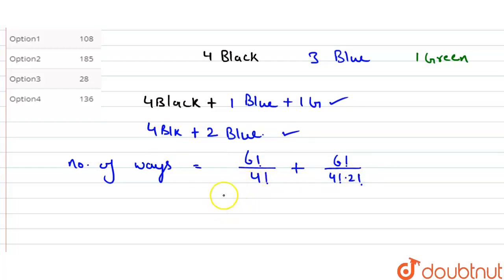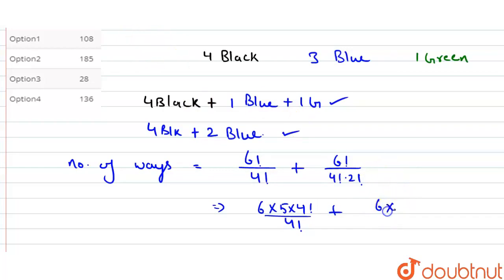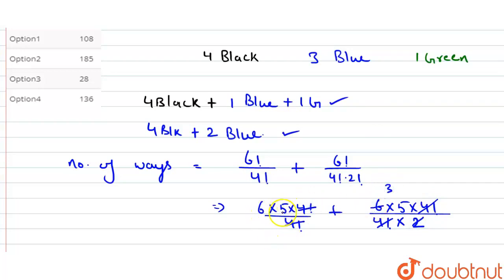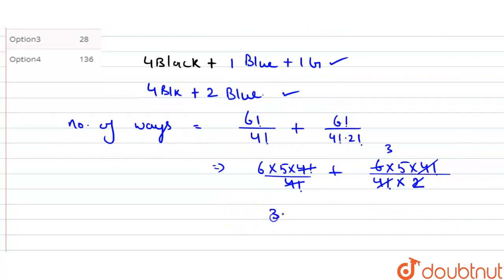So the number of ways from this case: 6 factorial = 6 × 5 × 4 factorial, divided by 4 factorial, plus 6 factorial = 6 × 5 × 4 factorial divided by 4 factorial × 2 factorial. The 4 factorials cancel out; 2 cancels giving 3 times. So 5 × 6 = 30, giving us 30, plus 5 × 3 = 15, so we get 45 ways when using 4 black flags with 1 blue and 1 green, or 2 blue flags.